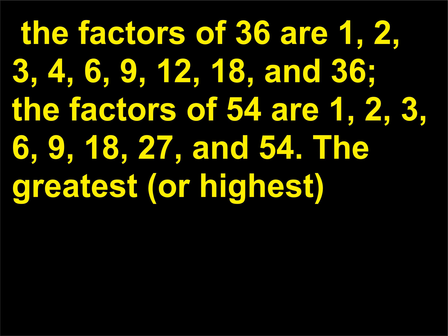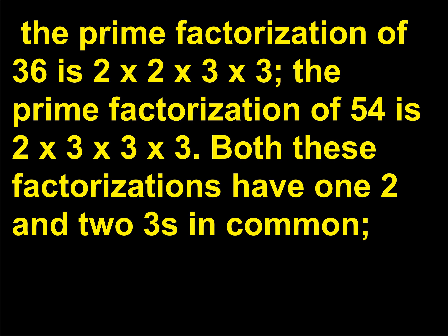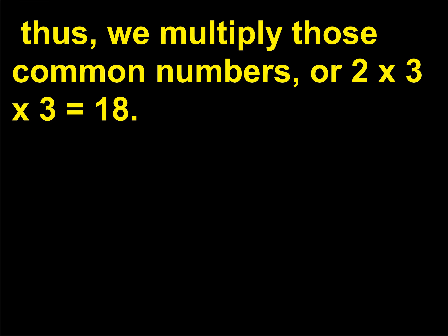The greatest, or highest, common factor of both numbers is 18. Working it out using prime factorization: the prime factorization of 36 is 2×2×3×3, and the prime factorization of 54 is 2×3×3×3. Both factorizations have one 2 and two 3s in common. Thus, we multiply those common numbers: 2×3×3 equals 18.